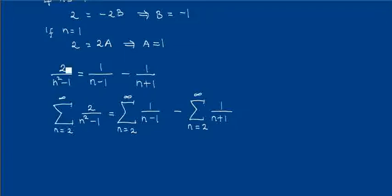Okay, now since we can write 2 over n squared minus 1 as 1 over n minus 1 minus 1 over n plus 1, can we write the series of 2 over n squared minus 1 and split it as the series of 1 over n minus 1 minus the series of 1 over n plus 1?